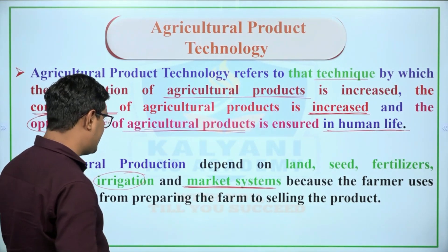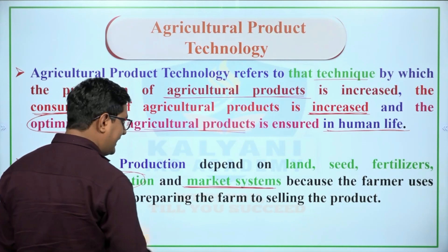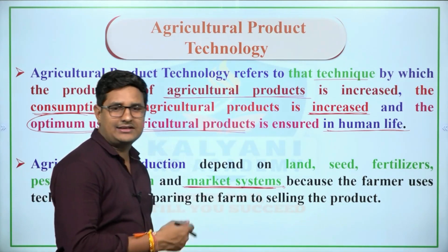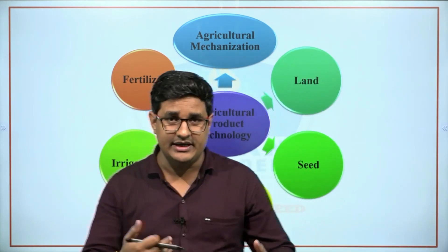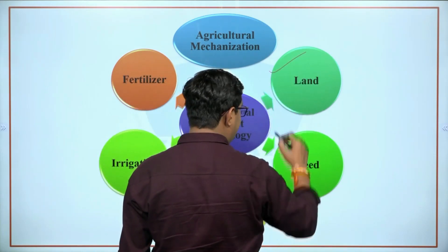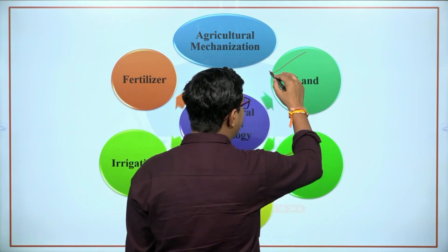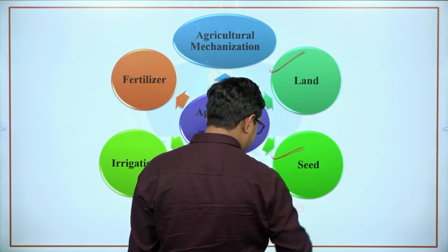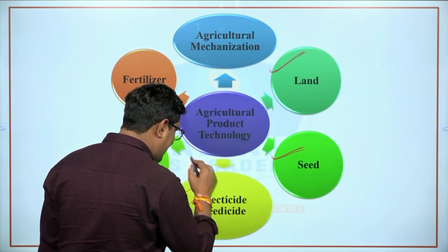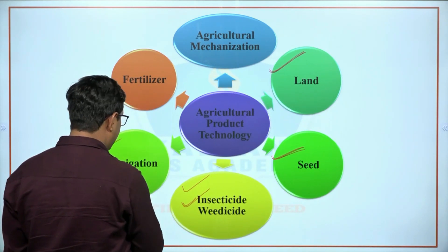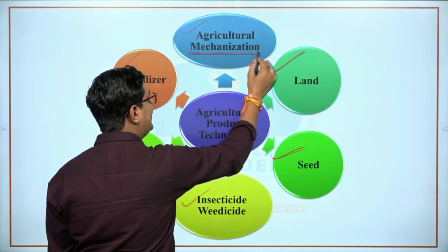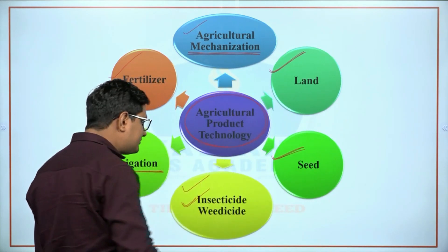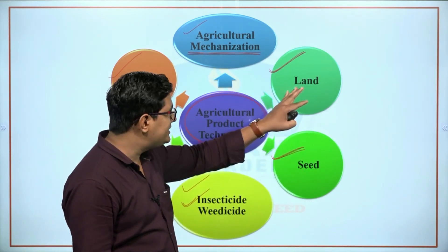Agricultural production depends on land, seed, fertilizers, irrigation, and market system. To understand agricultural product technology comprehensively, we need to understand land, seed, the importance of land quality, which seeds should be used, when and how insecticides or weedicides should be applied, which irrigation method should be used, fertilizers, and agricultural mechanization — all of these play a major role. We will study these components one by one, starting with land.